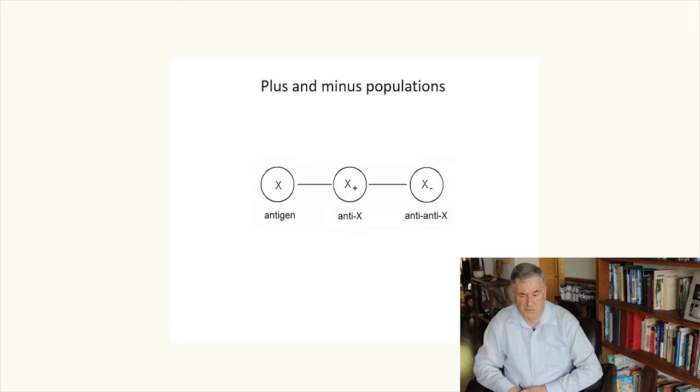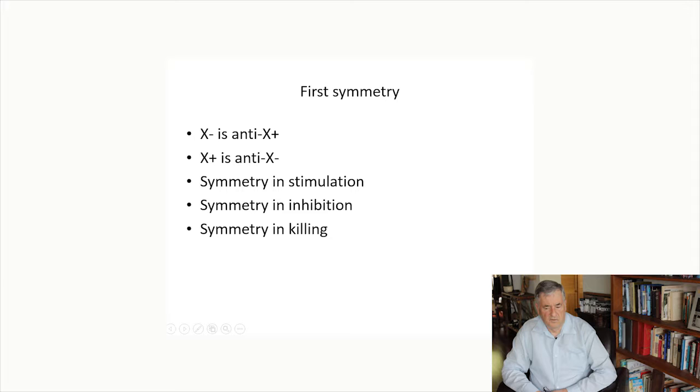So far, I haven't said anything about the immune network. Our first step in talking about the immune network is to define what I call plus and minus populations. If we have an antigen X, there's a population of lymphocytes called anti-X, and there's another population called anti-anti-X. The anti-X we'll simply call X plus and the anti-anti-X, X minus. This is what we call first symmetry. Symmetry in stimulation, symmetry in inhibition, and symmetry in killing.